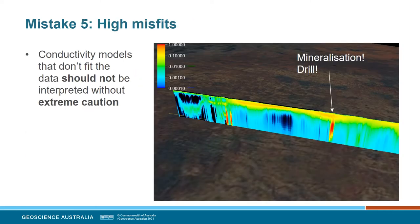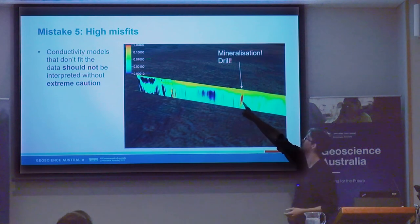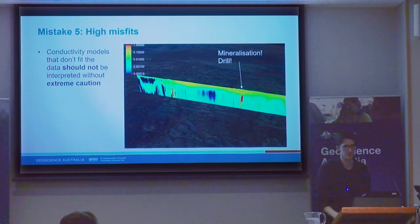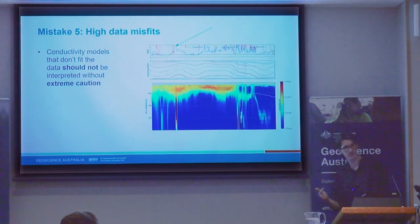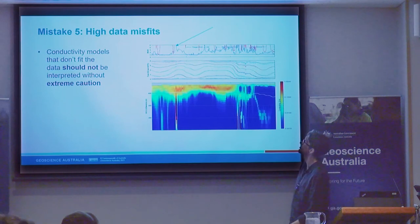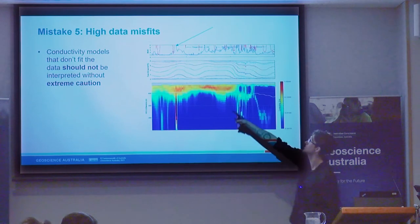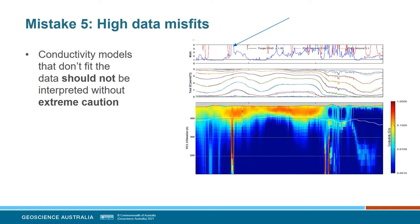Another one already covered is interpreting areas of high misfit. If your AEM has not fit the data, you shouldn't be interpreting it — or if you do, with extreme caution with everything else in context. Particularly be very suspicious of apparent anomalies. There's a temptation to get very excited when we see certain features, but check the power line monitor and check the misfit. In this case, the misfit is off the charts — we ran a different inversion with slightly different settings and it disappeared.